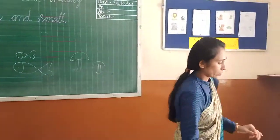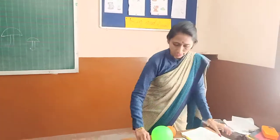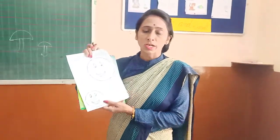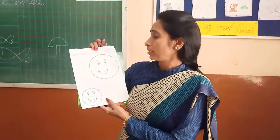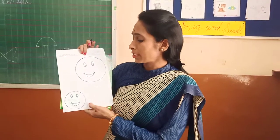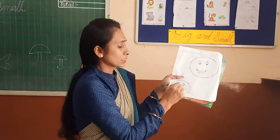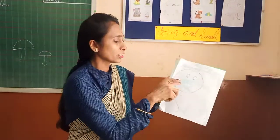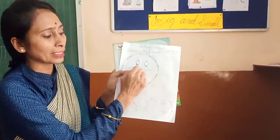Now, I also give a worksheet to clear the concept of big and small. Tell the student to identify the picture and scribble it. In these two pictures, which one is small? This one is small. So, scribble the small picture. And in the other worksheet, identify the big picture and scribble it like this way.